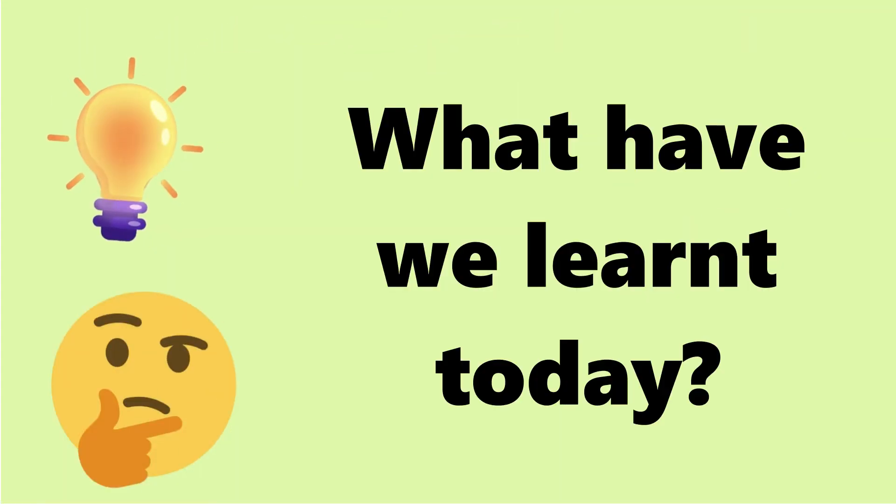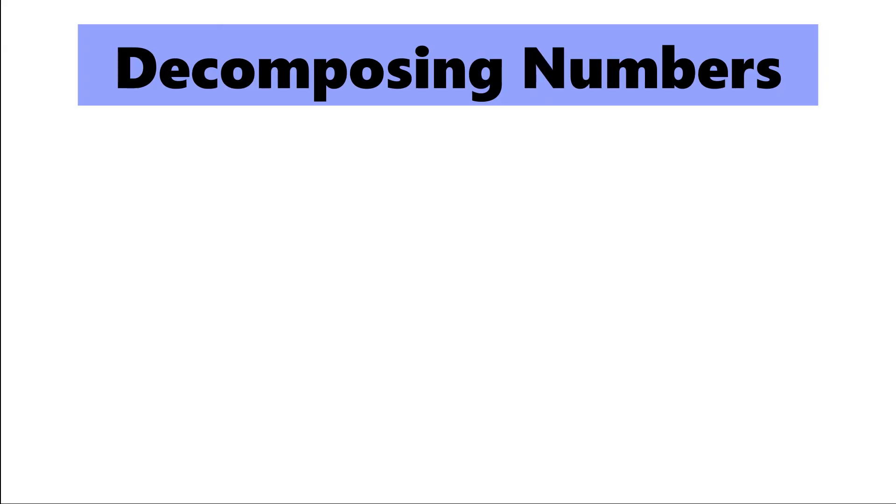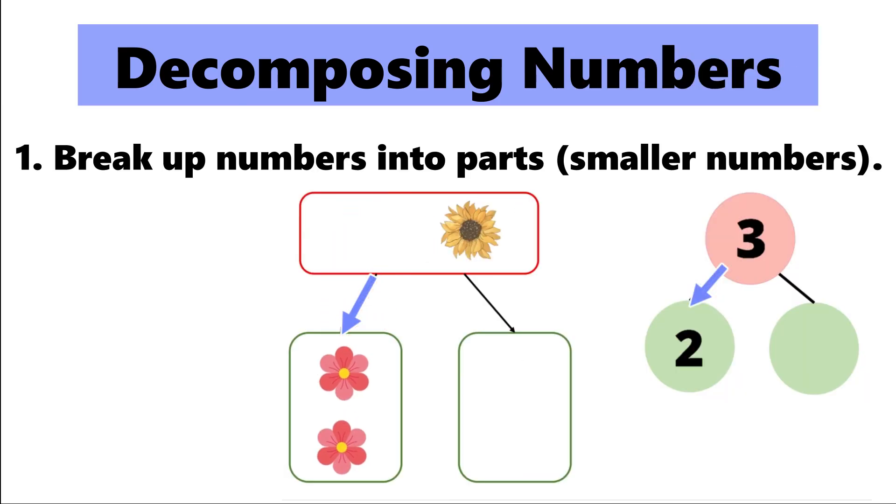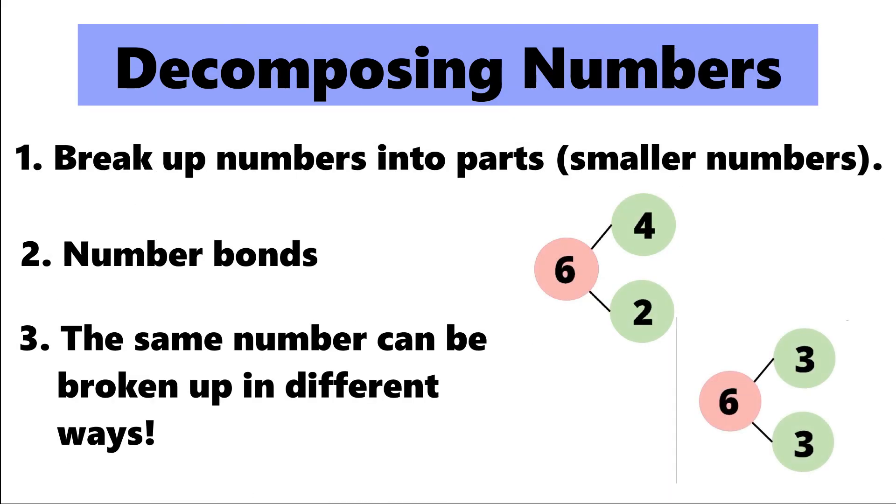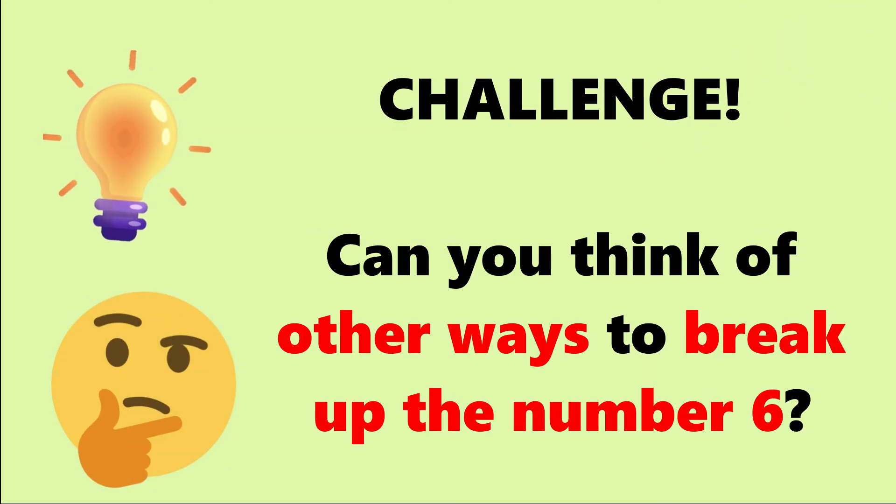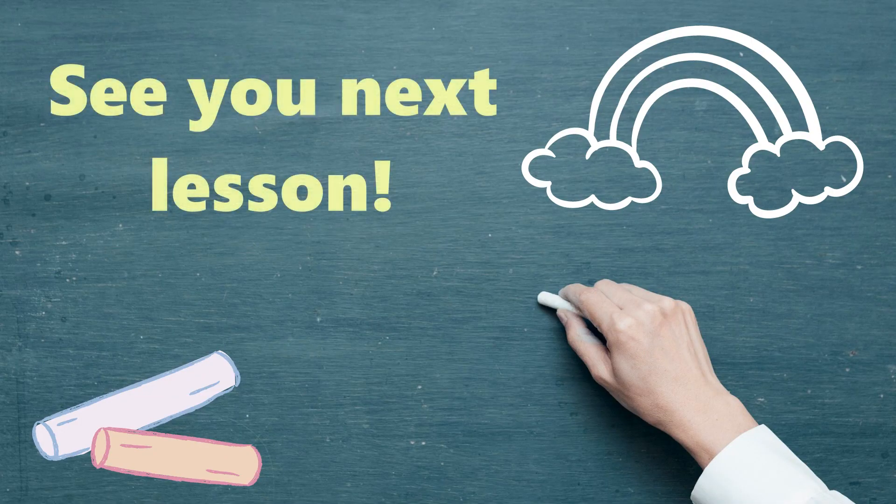What have we learnt today? We have learnt how to decompose numbers. Breaking up bigger numbers into parts or smaller numbers. We used number bonds to help us. Number bonds help us to see how the whole breaks up into parts. We also learnt that the same number can be broken up in different ways.